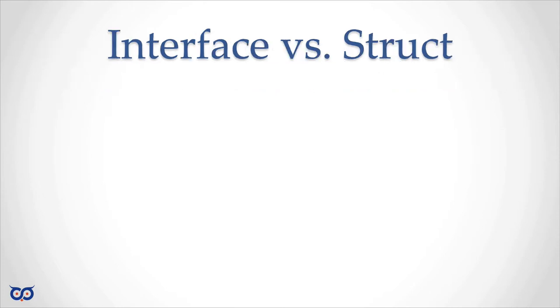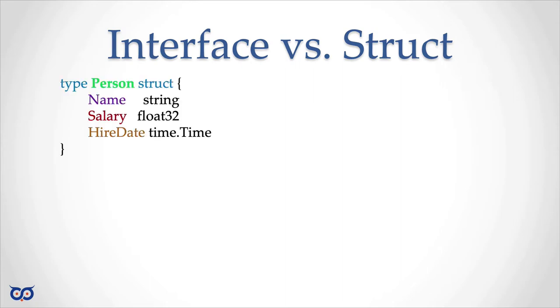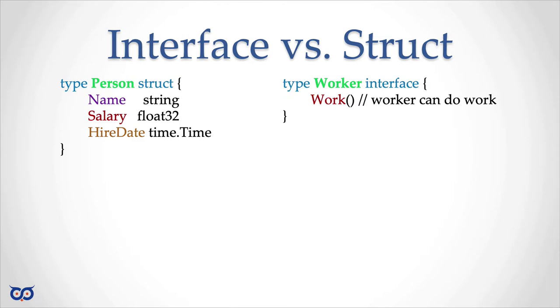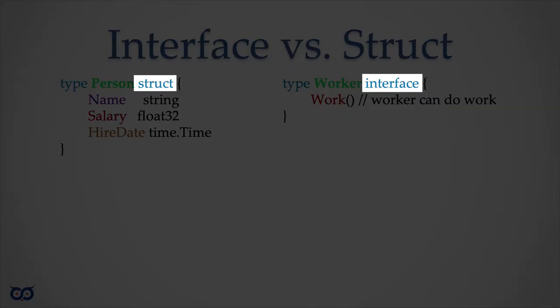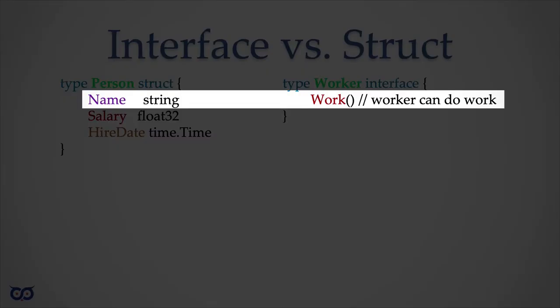Notice how an interface looks similar to a struct. In a struct, we're talking about fields and their types — how things are laid out in memory. If you create a structure variable, you expect to see in memory a set of bytes laid out to store a name value, a float value, and a time value. In an interface, however, we're saying these are the methods you can call.